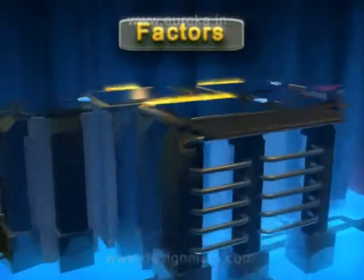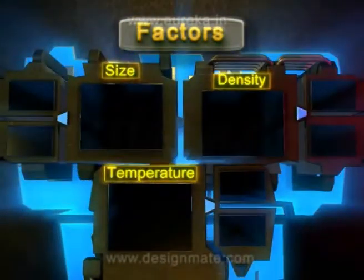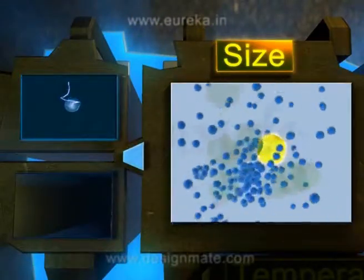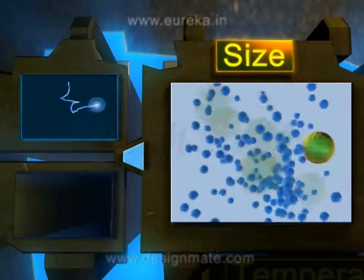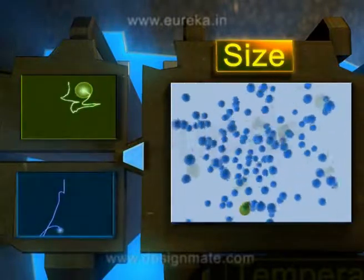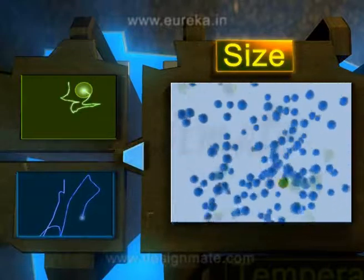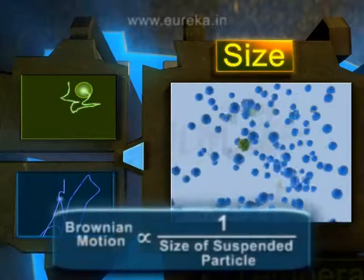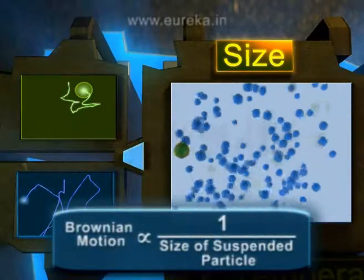Let us see the different factors on which the Brownian motion of a suspended particle depends. As the size of the particle increases, its Brownian movement decreases. Conversely, if the size of the particle decreases, the Brownian movement shown by this particle will be more. So, we can say that Brownian motion inversely depends upon the size of the suspended particle.